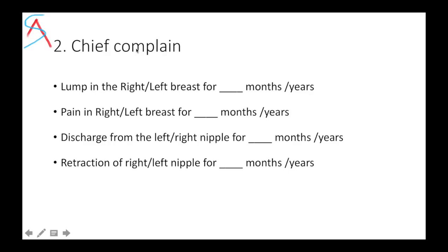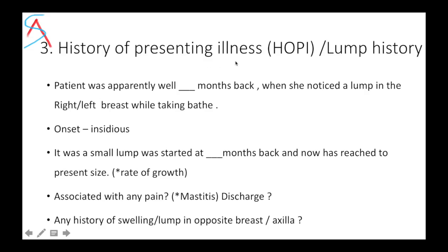Then we have to ask about the chief complaint, which would generally be a lump, pain, discharge, or any retraction of nipple — written with duration and in chronological order. Next would be the history of presenting illness section. Generally it would be a lump. Present your history like: the patient was apparently well these many months back when she noticed a lump in her right breast while taking bath.